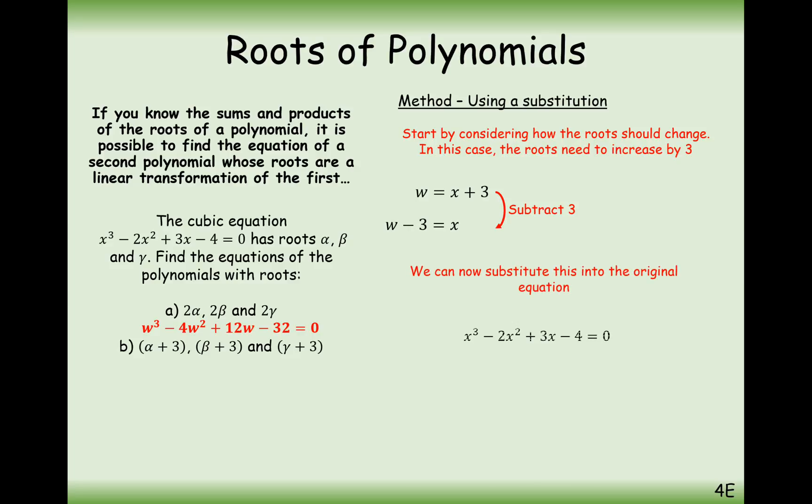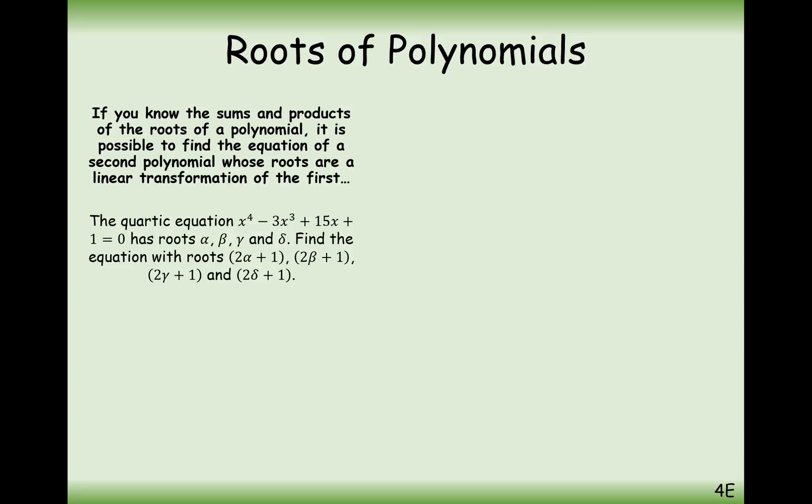And then substitute w minus 3 into our original cubic. Try and do this as efficiently as possible. And simplify and we get w cubed minus 11w squared plus 42w minus 58 equals 0. Okay, so that's how we do these questions here.